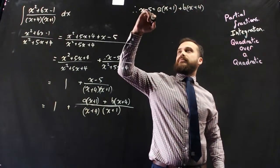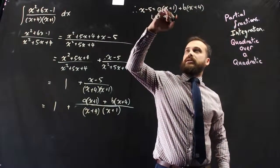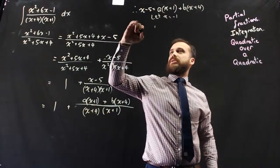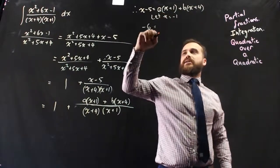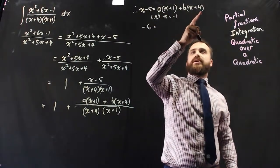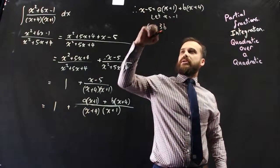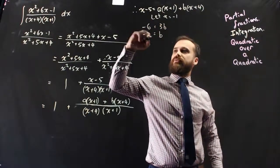And we can let x equal negative 1. So that's going to be negative 6. Negative 1 is going to cancel out the a. I'm going to have negative 1 plus 4, which is 3, so 3b. So b equals negative 2.